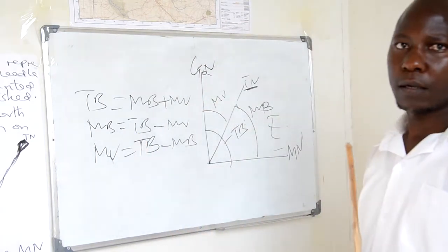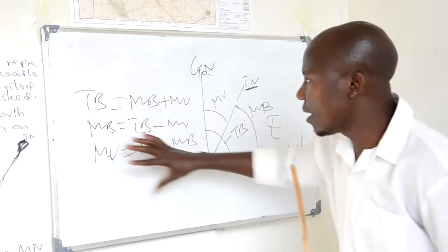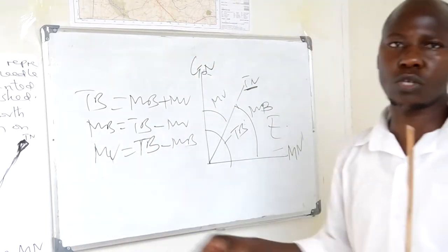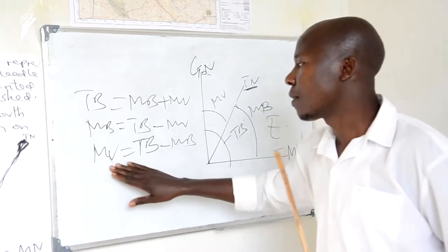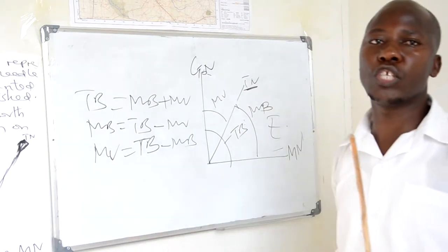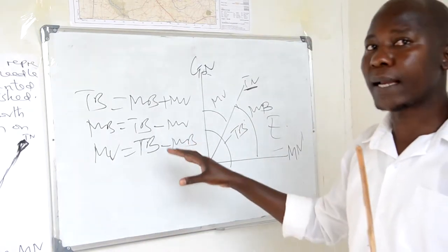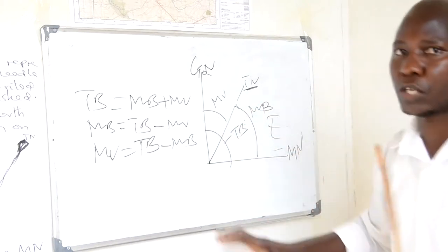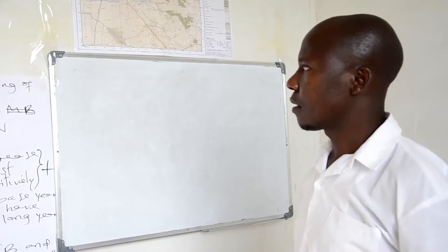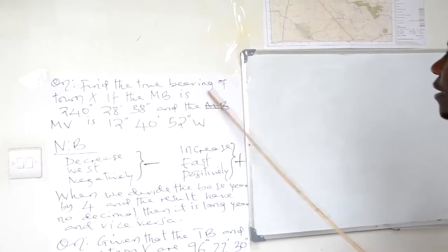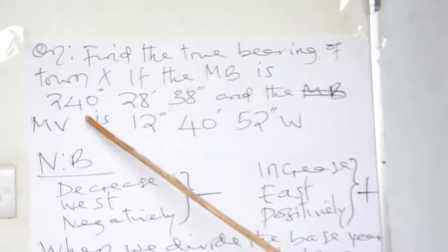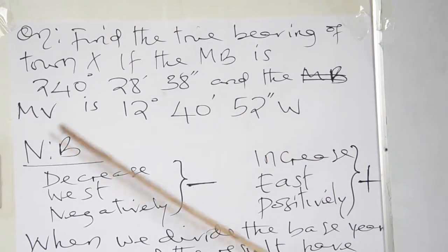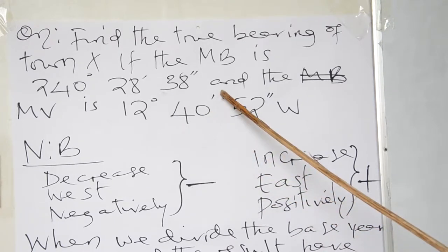You have to be keen on this because once you know these formulas, it will be good for your calculations. There are a lot of questions concerning this. For instance, here is a question: find the true bearing of town X if the magnetic bearing is 240 degrees, 28 minutes, 38 seconds, and the magnetic variation is 12 degrees, 40 minutes, and 52 seconds in Western parts.